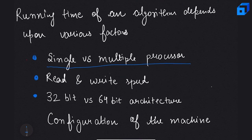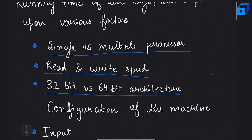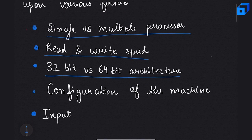It also depends upon the read and write speed of our program to the memory or to the disk. It also depends upon the architecture of the computer, whether the computer is based on 32-bit or 64-bit architecture. It also depends upon the configuration of the machine, and it also depends upon the input — how our program behaves with different input.